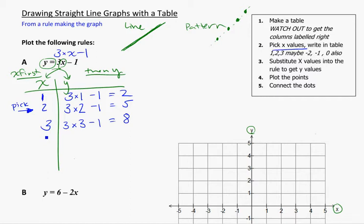And I could keep going. We could try 4. When x is equal to 4, I'm going to put that into the rule. So instead of saying 3 times x minus 1, I'm going to say 3 times 4 minus 1. 3 times 4 is 12, minus 1 is 11.